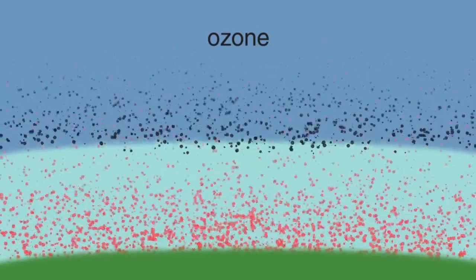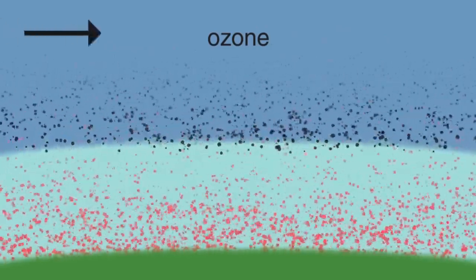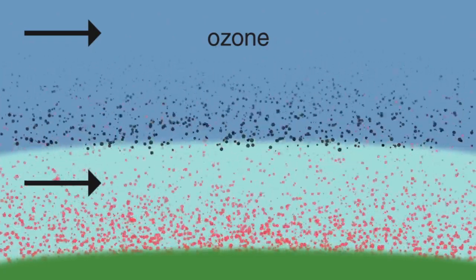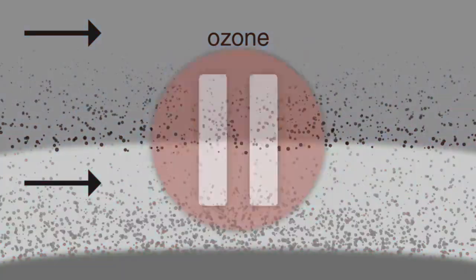The ozone is spread out through the stratosphere, shown here in black. Why do you think there is so little ozone high up and low down? Remember, we need ultraviolet radiation and oxygen to make ozone. Pause and think.